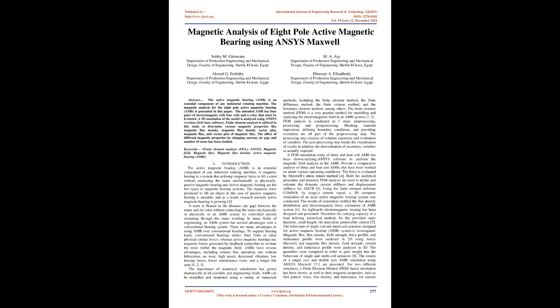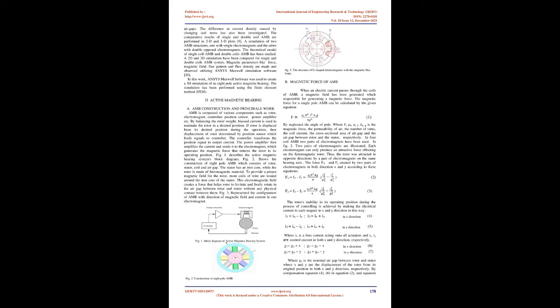FEM analysis is conducted in three steps: pre-processing, processing, and post-processing. Meshing, material imposition, defining boundary conditions, and providing excitation are all part of the pre-processing step. The processing step consists of solution equations and evaluation of variables. The post-processing step entails the visualization of results and the determination of secondary variables as required.